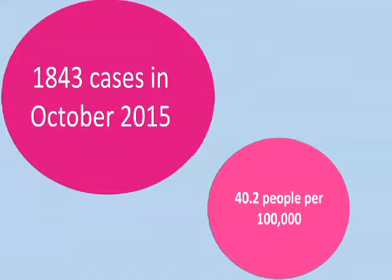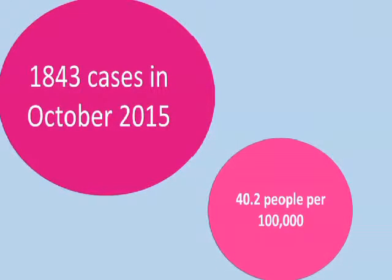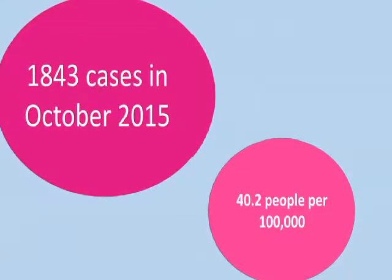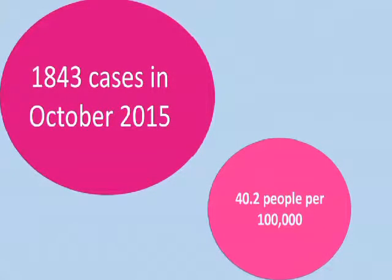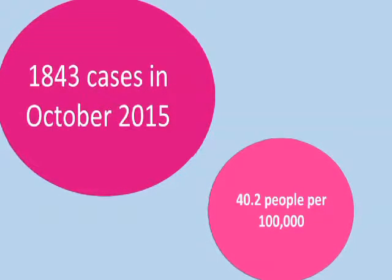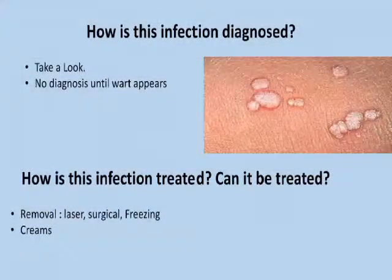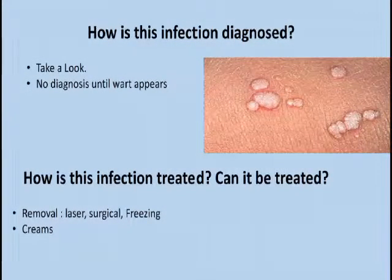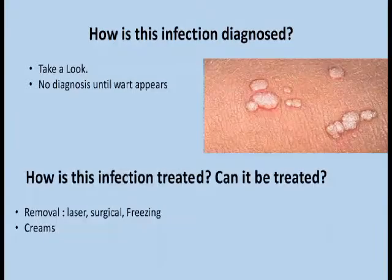As warts may be present on the thighs, condoms cannot 100% prevent the spread of this infection. This infection has a high incidence rate in Ireland. In October 2015, there were 1,843 cases recorded among 20 to 24-year-olds. The incidence of this infection is higher in males than it is in females.